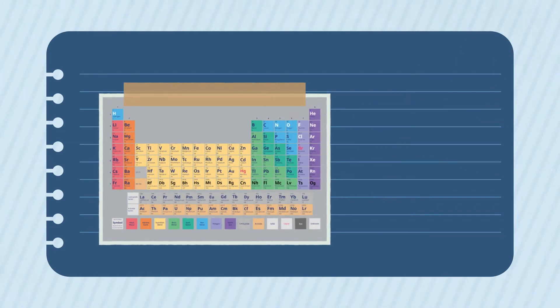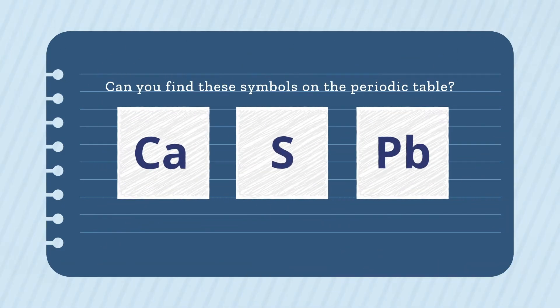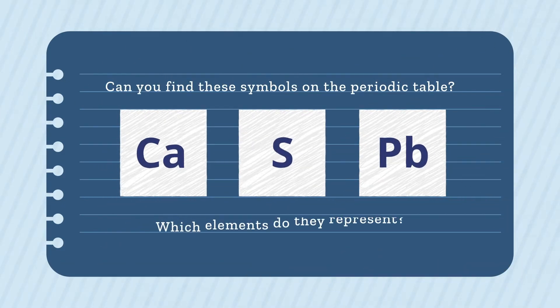Occasionally, the symbol for an element doesn't appear to relate to the element's name. Sodium, for example, has the symbol Na. This symbol originates from the Latin name for sodium, which was natrium. Can you find these symbols on the periodic table? Which elements do they represent?